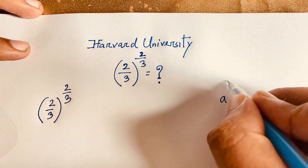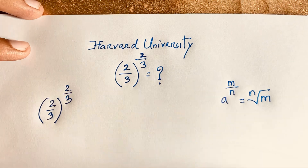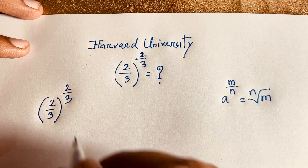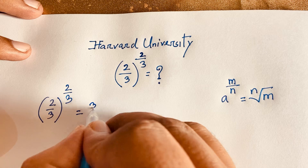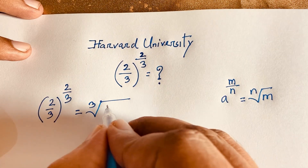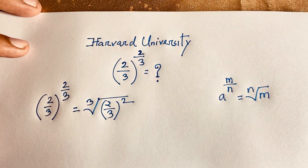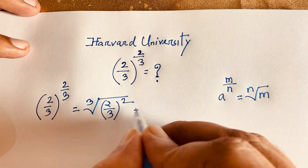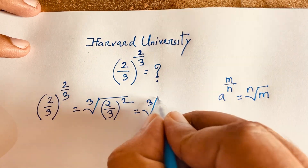Using the exponential law: a to the power m over n equals n-th root of a to the power m. According to this law, the denominator n is 3, so it will become a cube root.